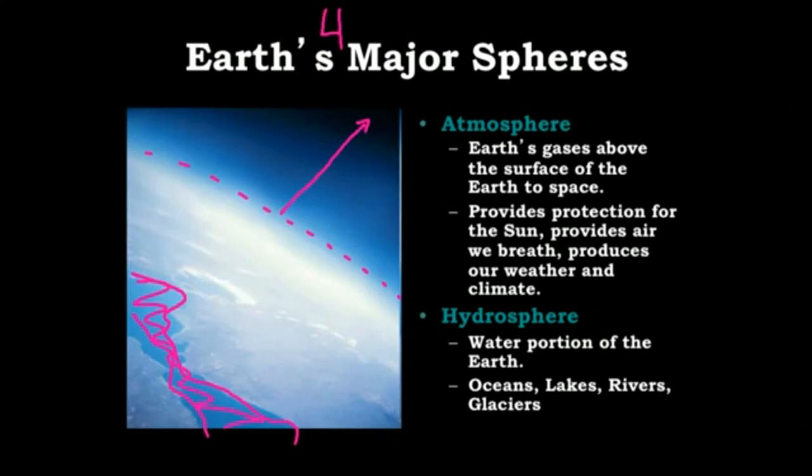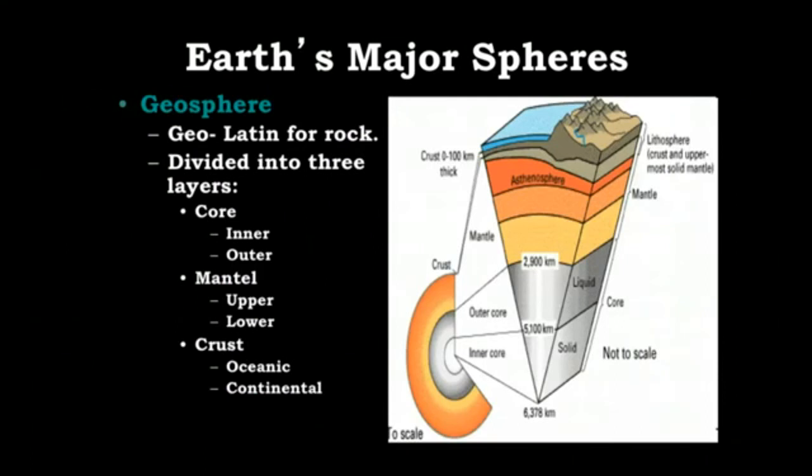The next layer that we're going to talk about is geosphere. Geo is Latin for rock or earth. It means the same thing in Latin. There is no distinction between rock and earth. There are three layers. What I want you to draw next to your notes under geosphere,